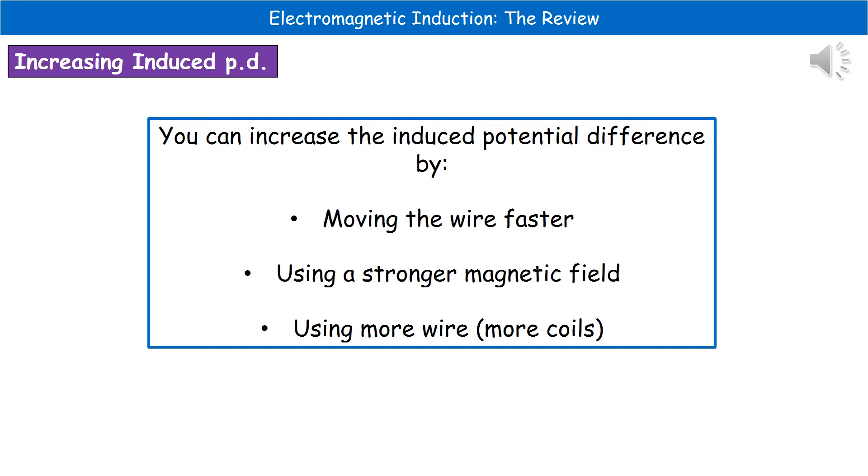So we've got three ways that we can actually increase the induced potential difference we're producing. The first is we can make the wire move faster. The faster the wire moves, then the more field lines will be cut in the same time.